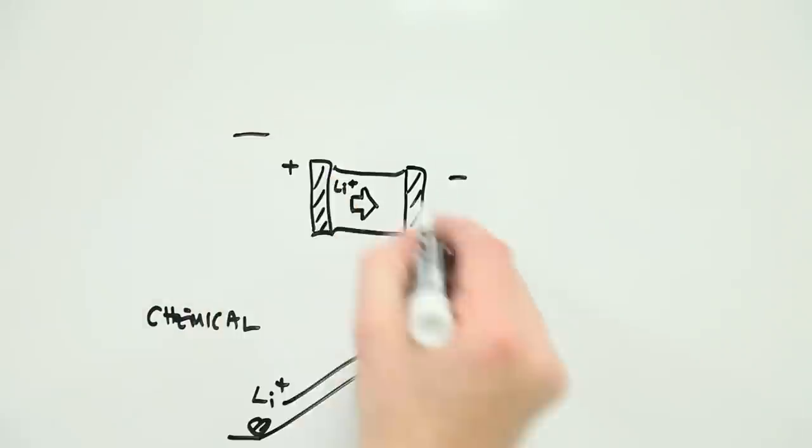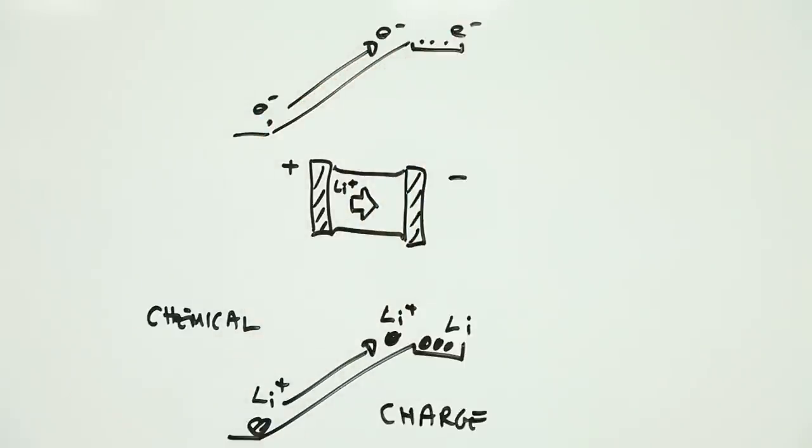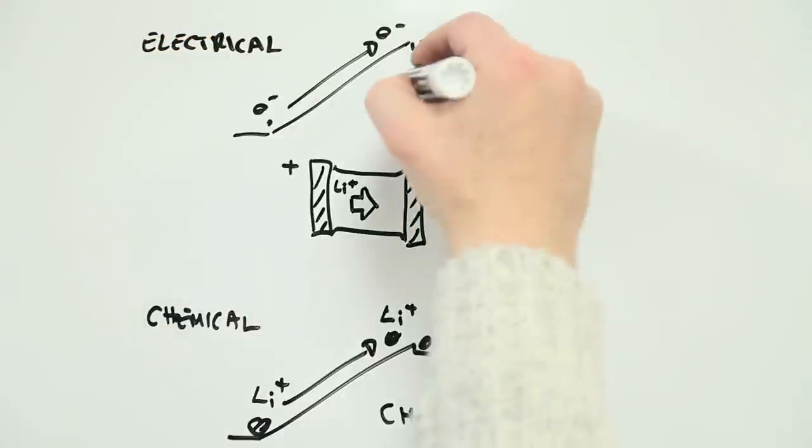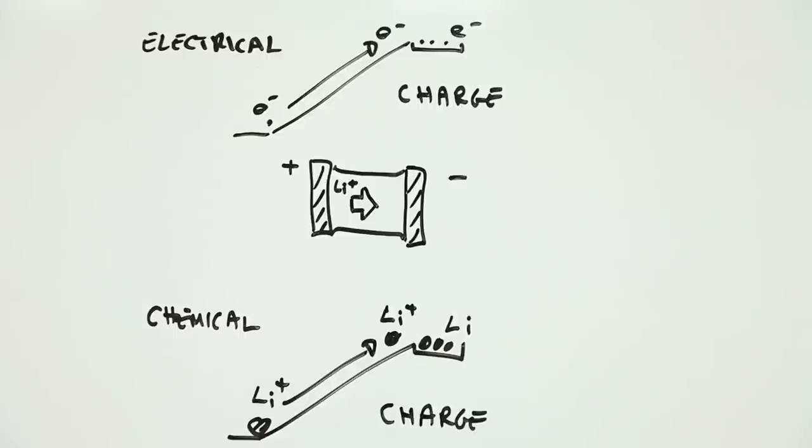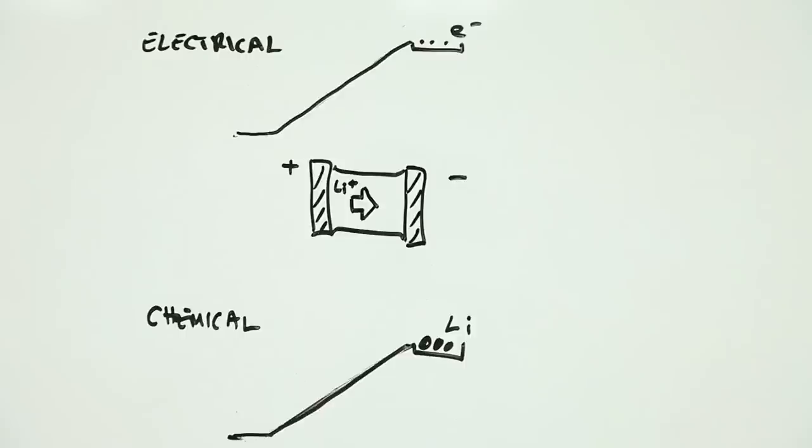In moving the lithium from one electrode to the other, a second energy slope has been created, an electrical one. Each lithium ion that moves to the carbon is associated with an electron that would love to slip back down to the positive electrode. But it can't unless an electric connection is made.